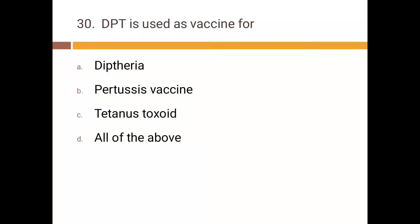DPT is used as vaccine for: a) Diphtheria, b) Pertussis, c) Tetanus toxoid, d) all of the above. Correct answer is d) all of the above.